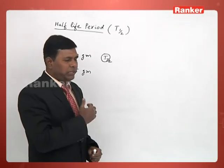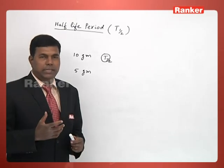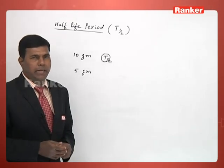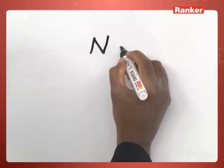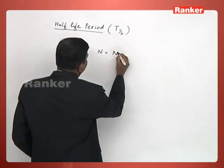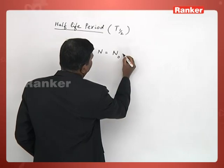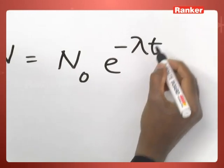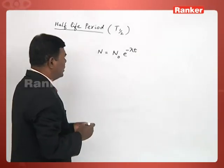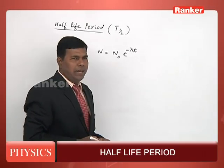We have an expression for this in terms of disintegration constant or decay constant. We will see that now. Let us start with the law of disintegration: N is equal to N naught into e power minus lambda t.